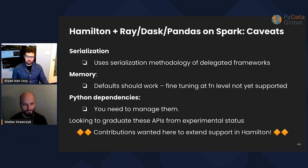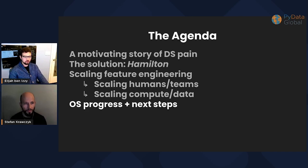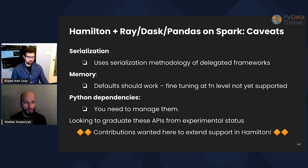A few caveats we're working through: you have to use the serialization methodology of the underlying delegated framework; the default memory behavior should work fine; fine-tuning at a function level isn't quite supported yet; and Python dependencies need to be managed — we don't have a framework for that yet. We're looking to graduate these APIs from experimental status, and we want contributions to help extend support. Also keep in mind your dataset size — these frameworks work better at scale, and with small data you might run into serialization costs. But we're interested in people playing with these features regardless of data size, so if something isn't working for you or you have feedback, please let us know.